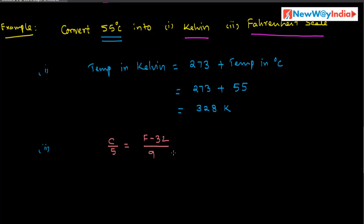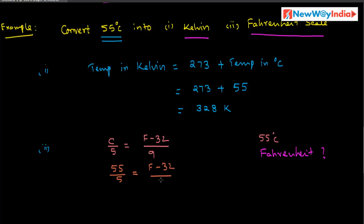We already have the values. The given Celsius measurement is 55 degree centigrade, and we have to find the Fahrenheit value. Substituting into the relation: 55 divided by 5 is equal to F minus 32 divided by 9. Rearranging: F minus 32 is equal to 55 divided by 5, multiplied by 9.